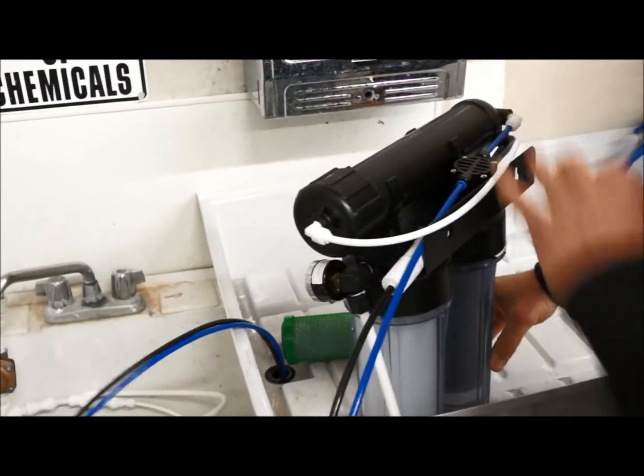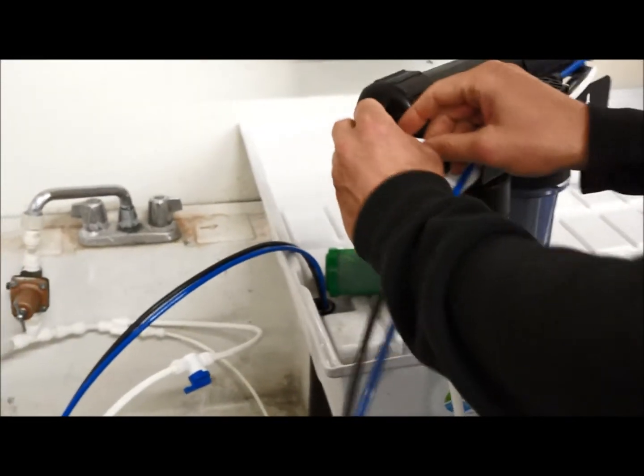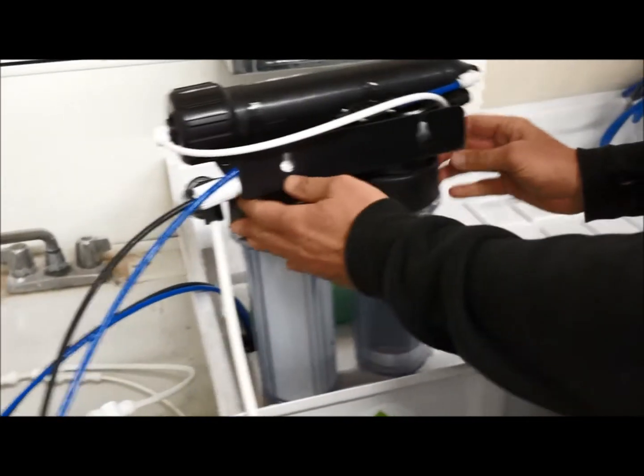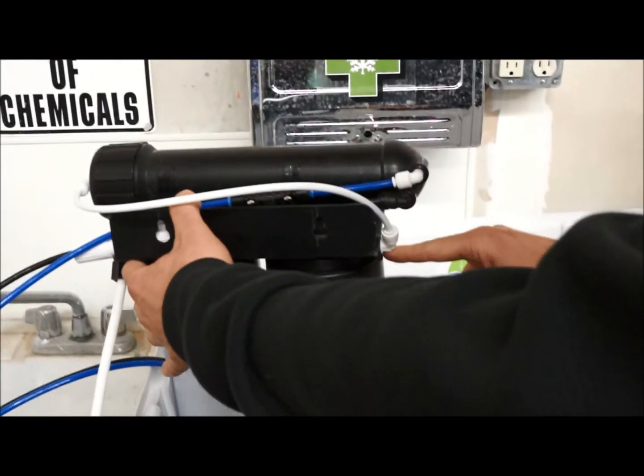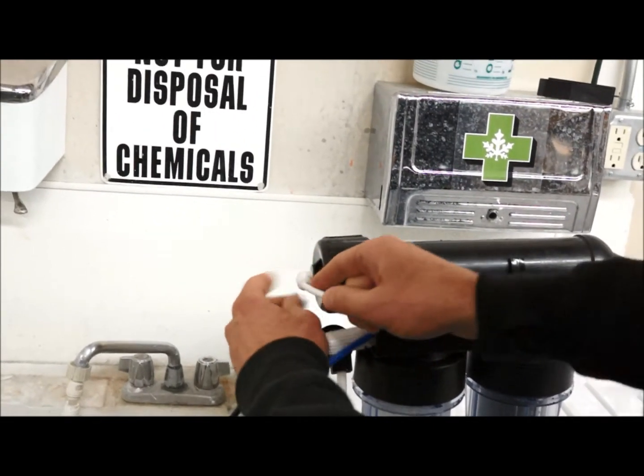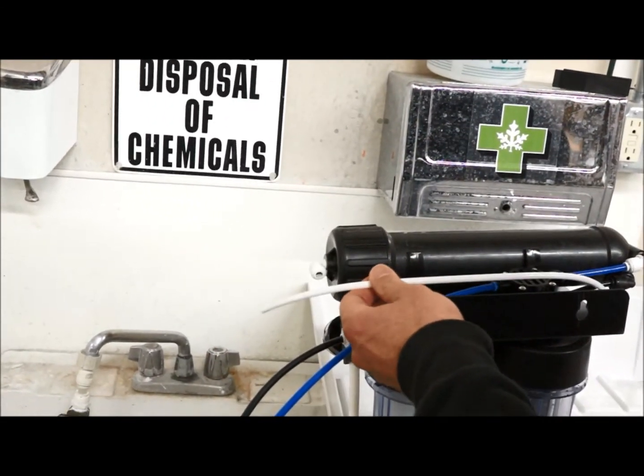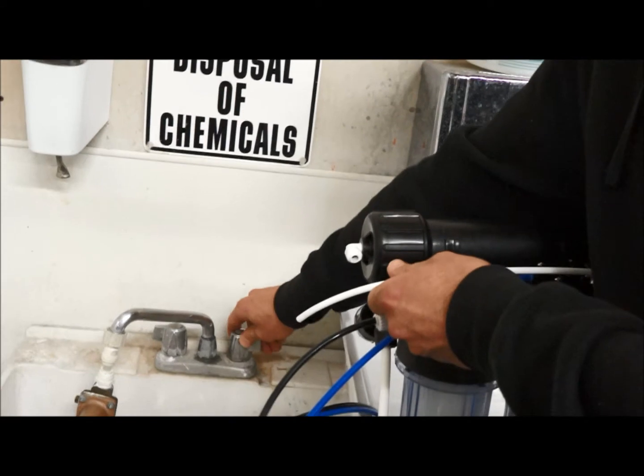Hand tightening is sufficient in most cases. I'm going to disconnect the line that comes out of the carbon filter and goes into the membrane. I'm going to disconnect it right here using the quick connect fittings at the membrane, and then I'm just going to flush it for a few minutes.